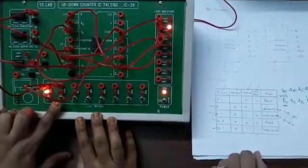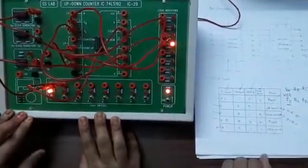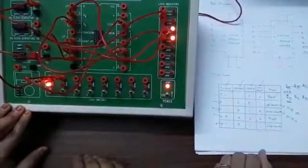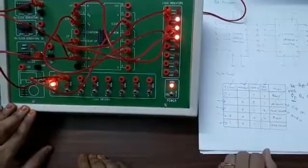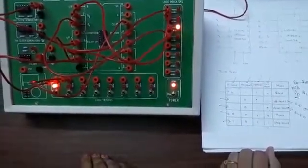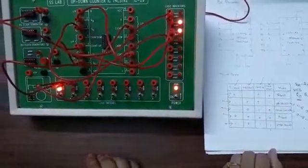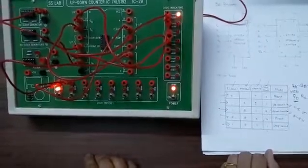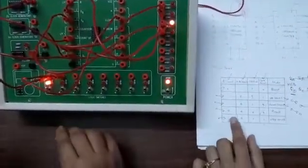After clearing, you can see the up count: one, two, three, four, five, six, seven, eight, nine, zero - it counts from zero to nine repeatedly. This process continues in a cycle.